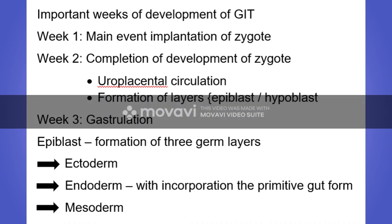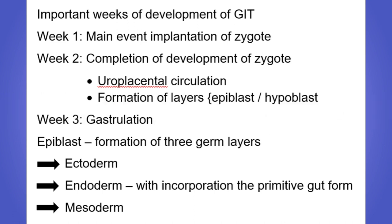During week three, gastrulation occurs. Gastrulation is the formation of germ layers from the epiblast. These three germ layers are the ectoderm, endoderm, and mesoderm.